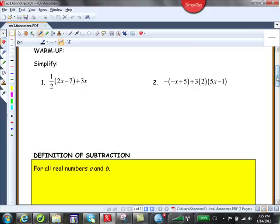All right, so let's see how you did. So this will yield a result of 1 half times 2x minus 1 half times 7. That's using which law? Good, the distributive law or distributive property.